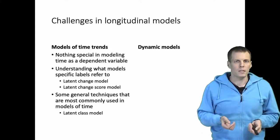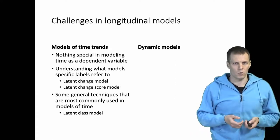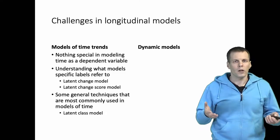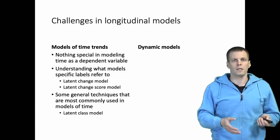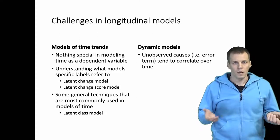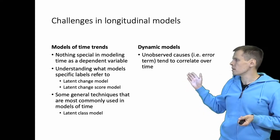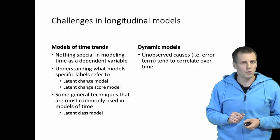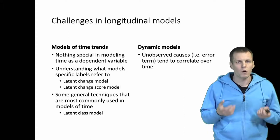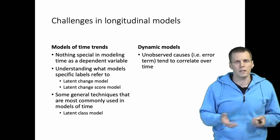Then dynamic models—this is the challenging case in longitudinal analysis, and a dynamic model is a model again where y explains its future values. And what makes these complicated is that the unobserved causes or the error term tends to correlate over time. And why is that the case?